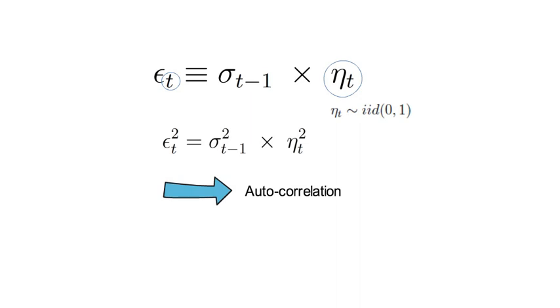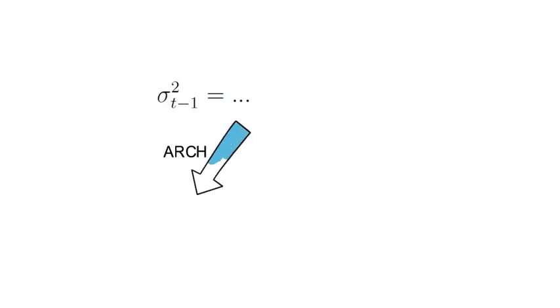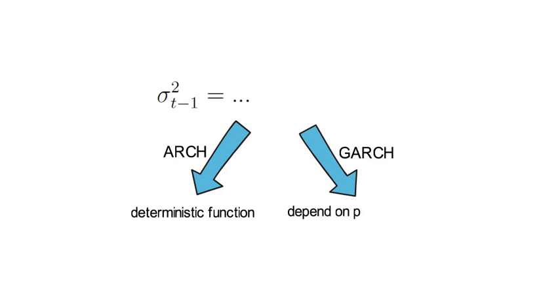Different ARCH and GARCH models do assume a slightly different parametric structure for σ2t-1. While ARCH models assume the variance to be a deterministic function of past unexpected return innovations, GARCH models assume in addition that today's variance does also depend on the level of previous variance.